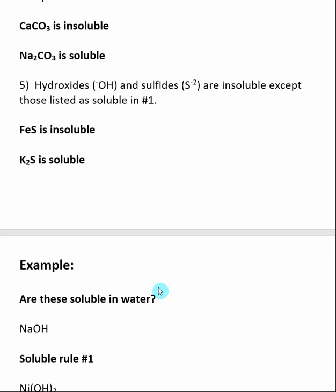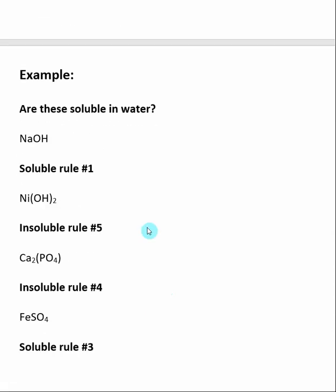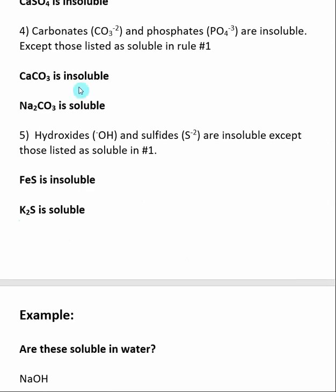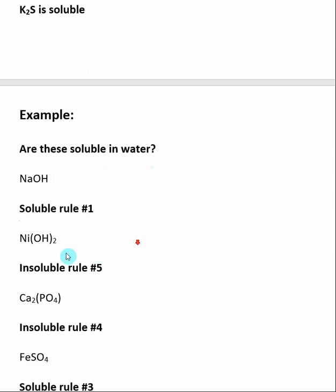Let's look at some more examples. One of the main skills you want to develop is being able to tell if a given salt is soluble in water or not. First, sodium hydroxide — this is soluble because sodium is mentioned in Rule 1. You always start with Rule 1, see if it applies, then continue on. Next, nickel(II) hydroxide — Rule 1 does not mention nickel or hydroxide. The applicable rule states that hydroxides and sulfides are insoluble except for those in Rule 1. Because nickel is not in Rule 1, nickel(II) hydroxide is insoluble.